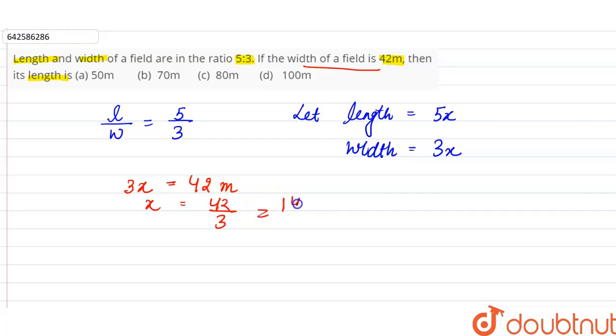From there we can find the length of the field. So length of the field is 5x, which means 5 times 14, which equals 70 meters. So from the options, we can say that the correct option is option B.